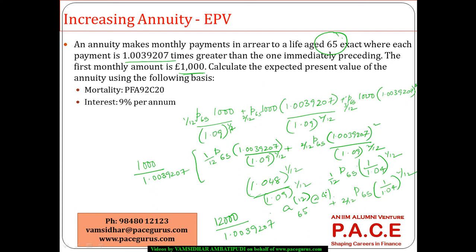So the problem is getting simplified to 12,000 divided by 1.0039207, and A65 on a 12 monthly basis. If I require A65, I would first go with A double dot 65. If I am talking of A double dot 65 minus 1, this is A65. And for this, I am adding up 11 by 24 to finally arrive at the value.